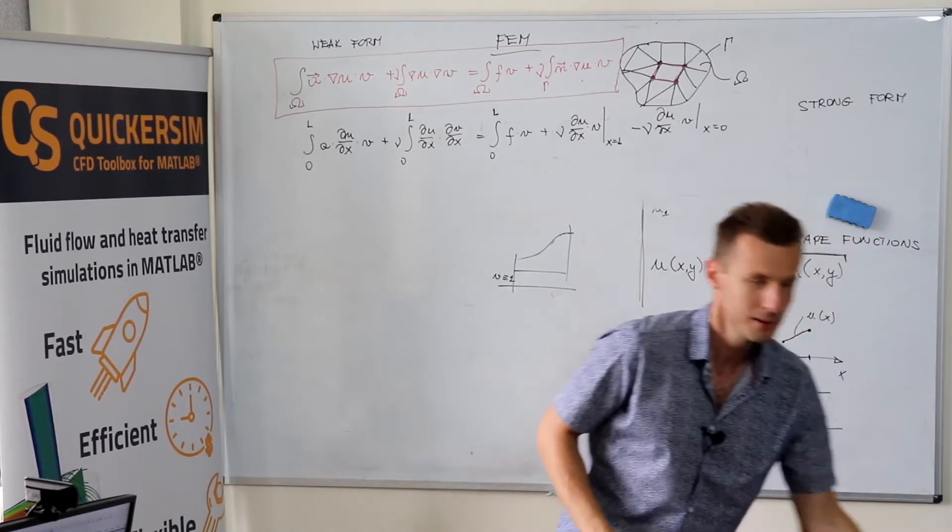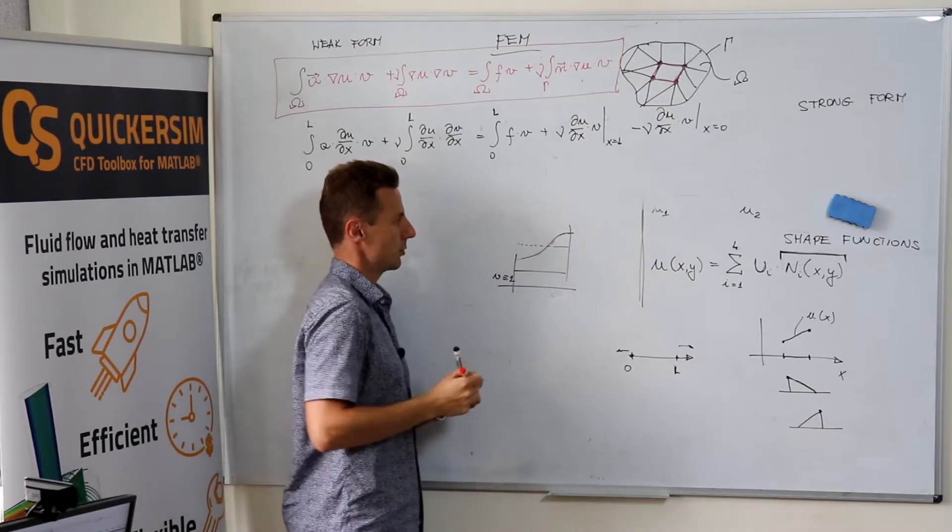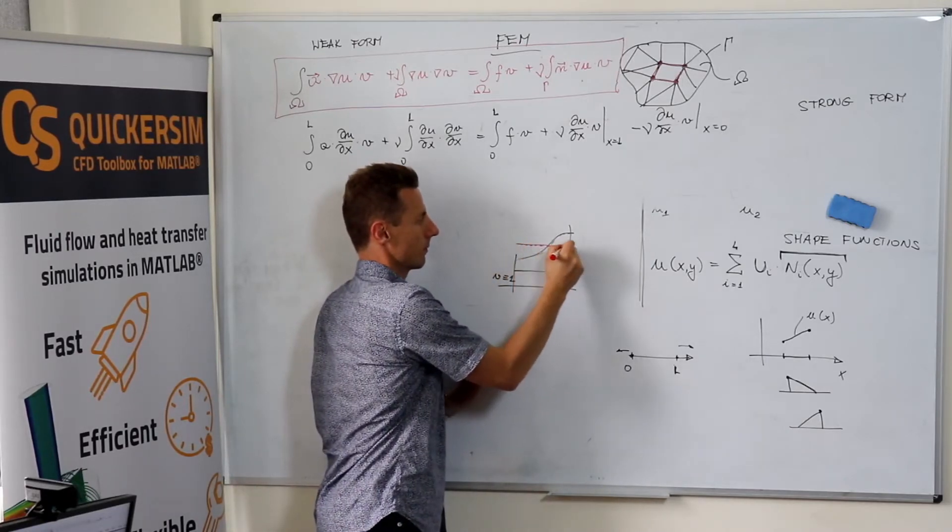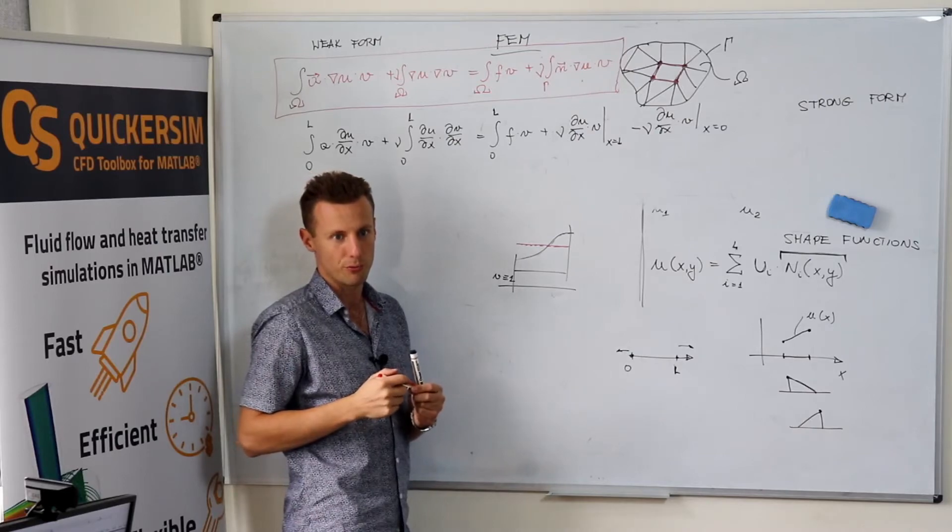If you select v to be equal one everywhere, what would it mean? It means that if you choose such a function, then the equation is already fulfilled.